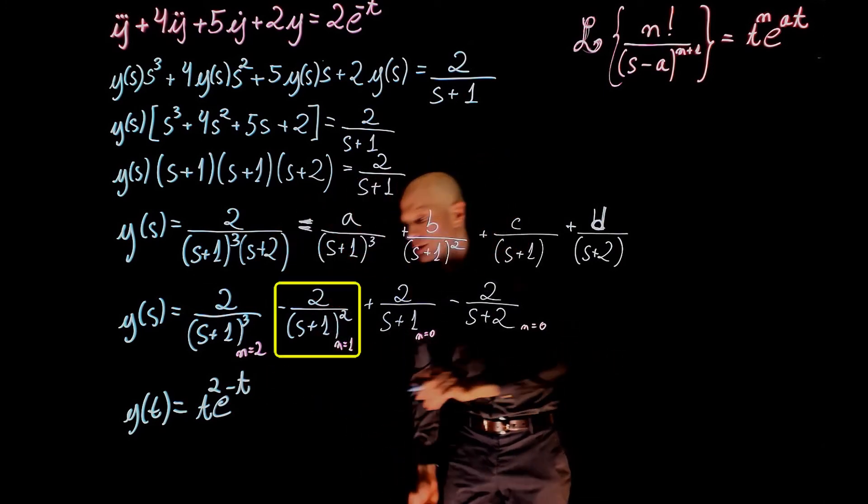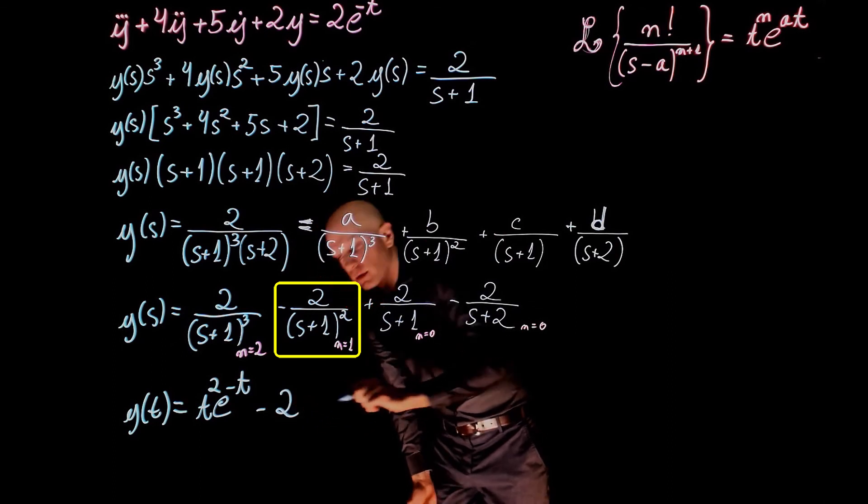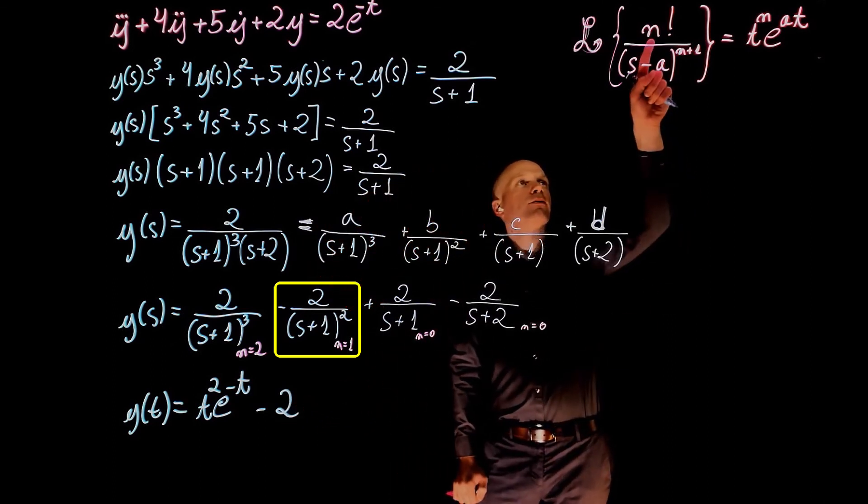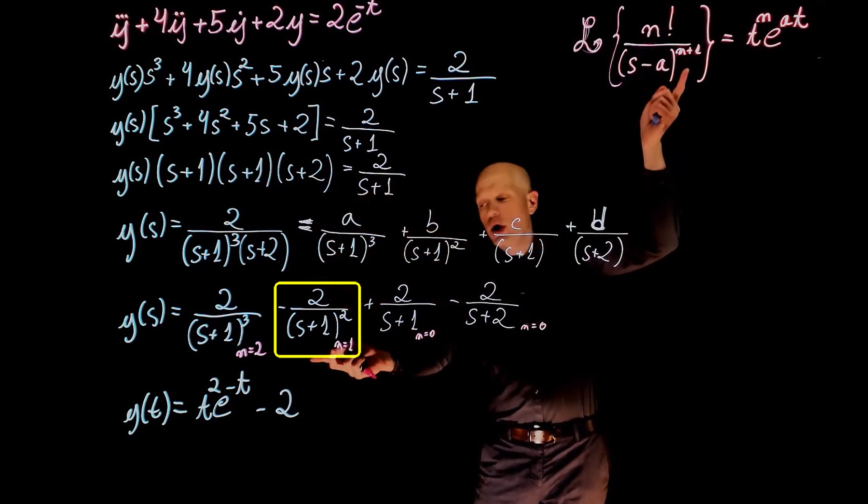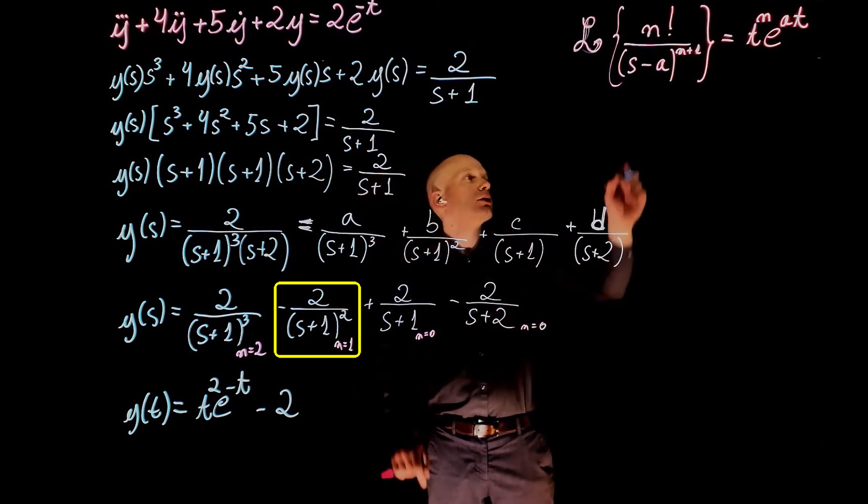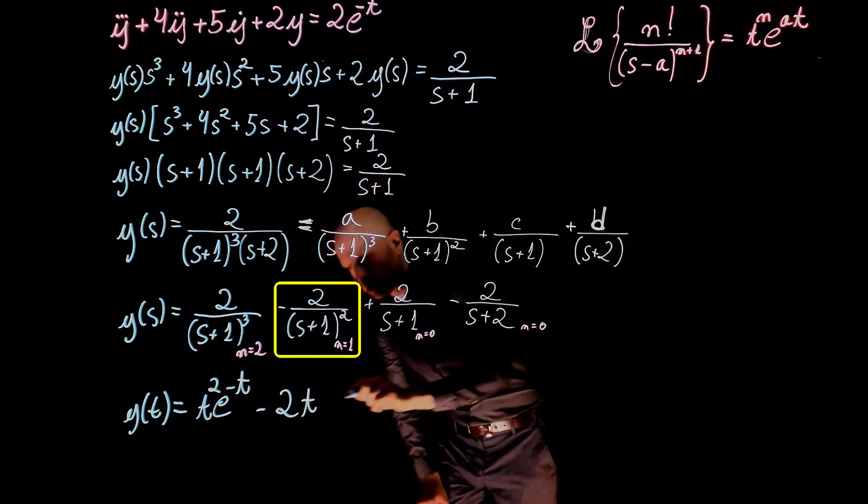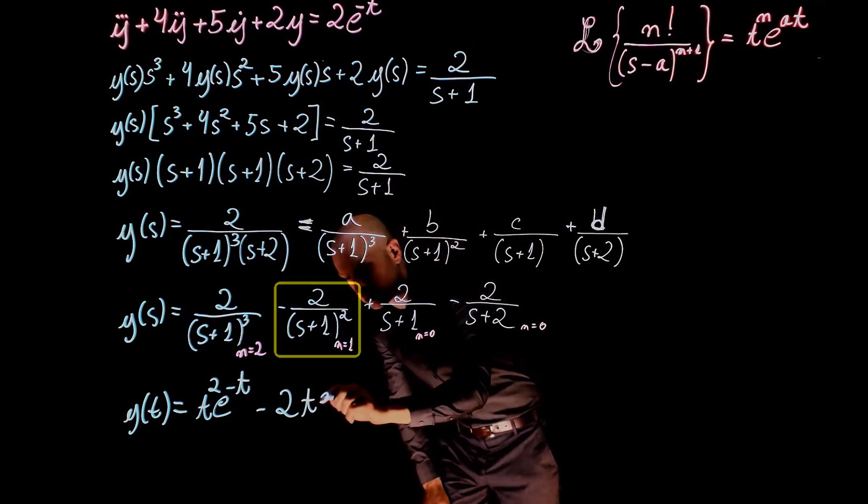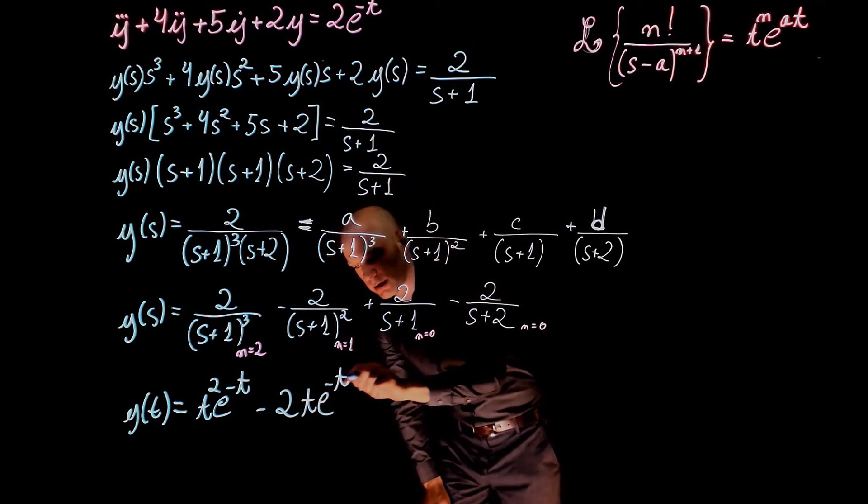The second term, negative 2. We have factorial of 1 is 1, and t to the power of 1 exponential of negative t.